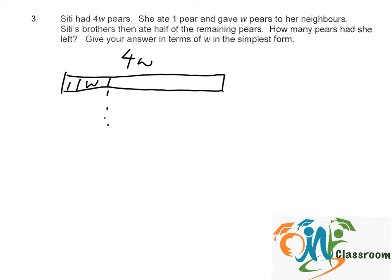What she had left here would be four W minus one minus W. That will give us three W minus one.